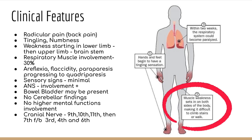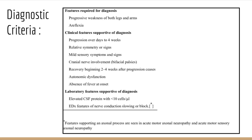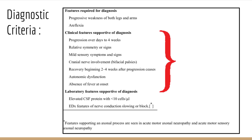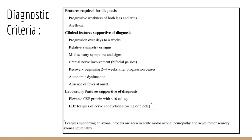The diagnostic criteria require progressive weakness of both legs and arms and areflexia as the core features. Supportive clinical features include progression over days to four weeks, relative symmetry, mild sensory symptoms and signs, cranial nerve involvement with bifacial palsy, recovery beginning two to four weeks after progression ceases, autonomic dysfunction, and absence of fever at onset.